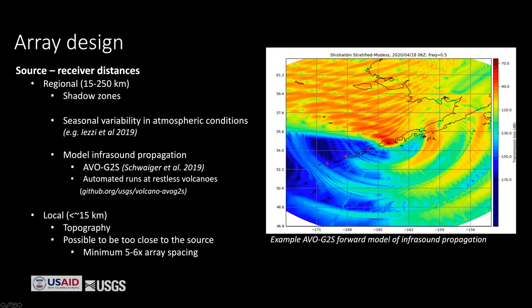Hans automatically runs these models for all of our restless volcanoes in Alaska, so if a volcano becomes restless we can quickly look and see whether it's likely or unlikely that a certain array will detect an explosive event. Locally, topography is also something to consider — if there is steep terrain between the array and your source, it may block that sound.